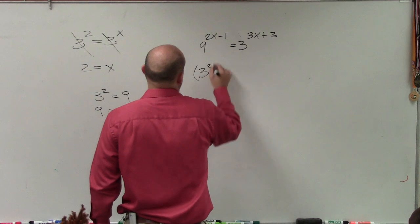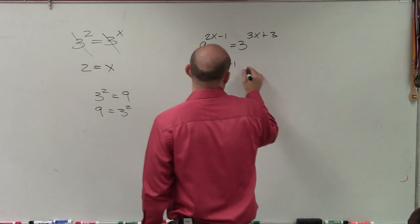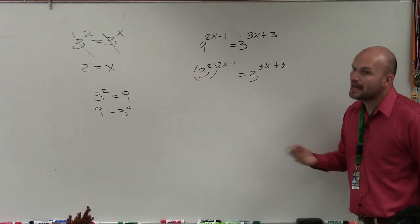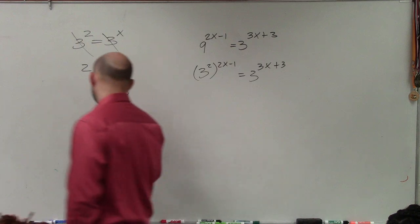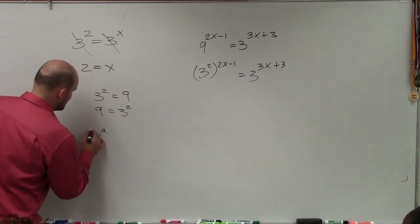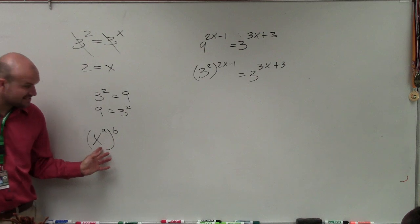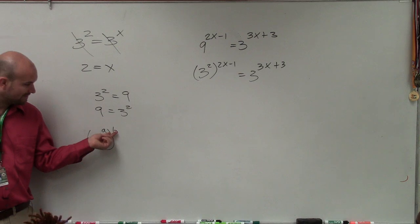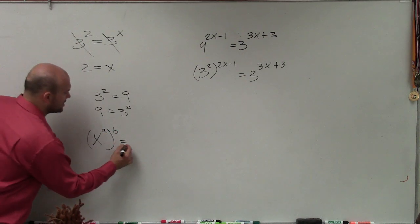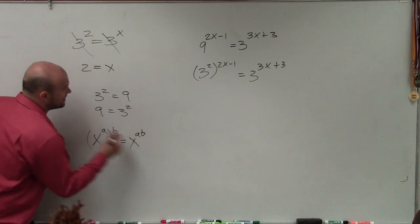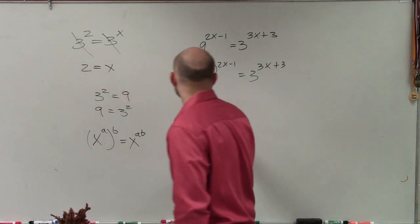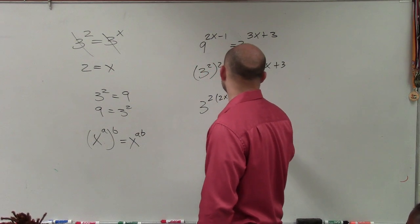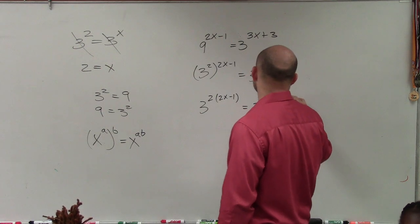So what I'll do is I'll rewrite this as 3 squared times 2x minus 1 equals 3 times 3x plus 3. Now there's another rule from Algebra 2 you're going to want to remember. And this is the power rule. Whenever you have a base or an exponent raised to another power, you have to multiply the powers. So that becomes x to the a times b.